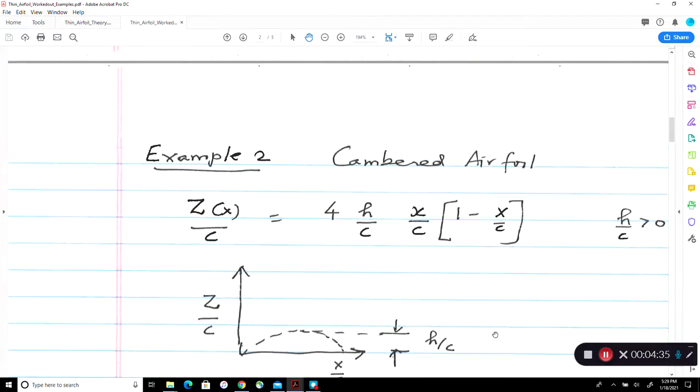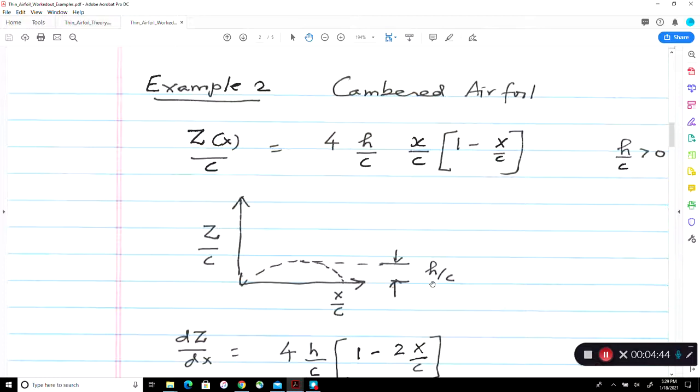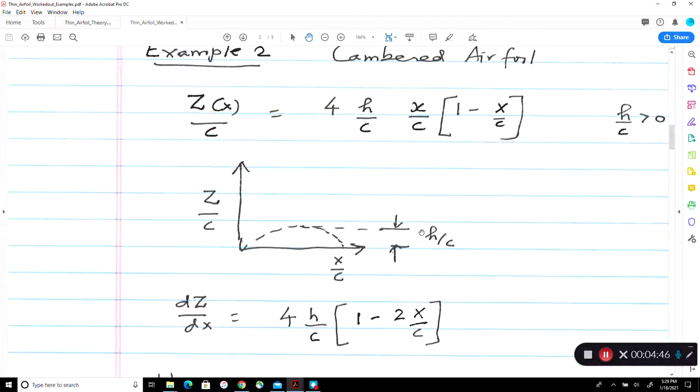The peak value occurs, if you take a derivative and set it to zero, it occurs at the midpoint, dz dx is zero at the midpoint. So at midpoint, this is one half, this is one half, so the height is h over c. So h over c is a small number. Remember, we're talking about very very mild camber. So this is like 0.01, 0.02, 0.04, something like that. 1%, 2%, 4% camber.